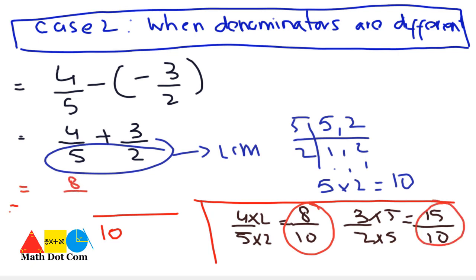Instead of 4 over 5 we will write 8 over 10 plus instead of 3 over 2 we will write 15 over 10. Now we are having the same denominator and we will solve it as we have done in case 1. 10 is the LCM. Just add them together and you will get 23 over 10. So this is one of the methods that you will use for subtracting the two rational numbers.